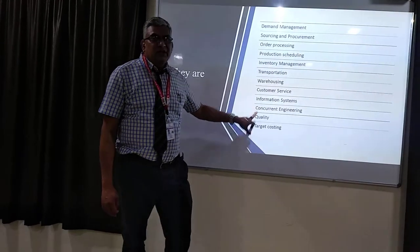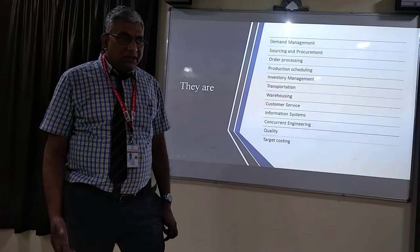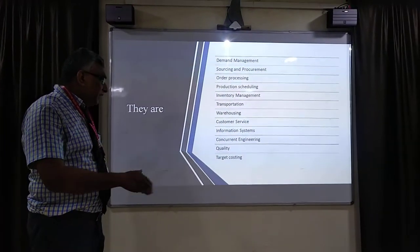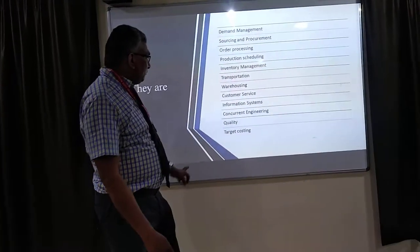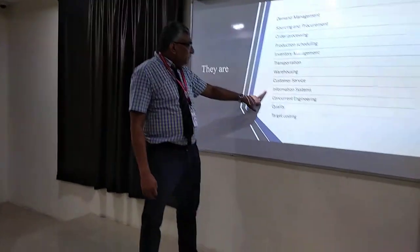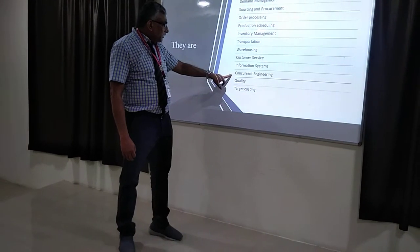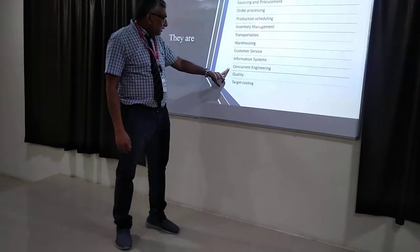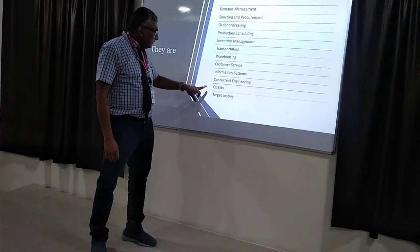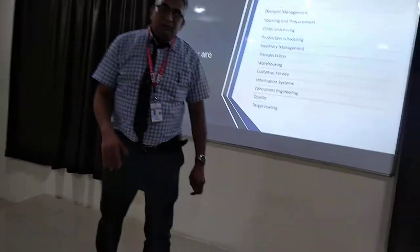Information flow is also important — information has to flow from various levels in the organization, from top to bottom, and from marketing to finance to production. It should be seamlessly integrated with an ERP system. Then concurrent engineering is where design and manufacturing work together. Another important element is quality — the quality of the product is very important when talking about manufacturing.